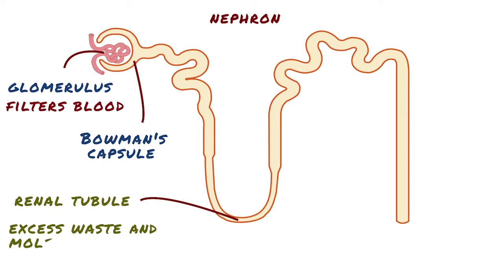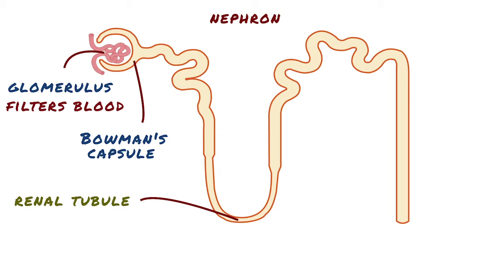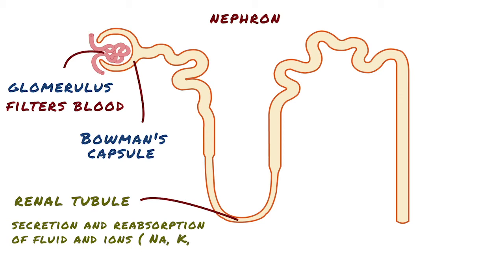The filtrate next moves to the renal tubule, where excess water and molecules such as ions are removed or filtered through an exchange between the tubule and the peritubular capillaries. The renal tubule plays a huge role in secretion and reabsorption of fluid and ions such as sodium, potassium, and chloride, in order to maintain homeostasis, or the balance of fluid and ions in our body.